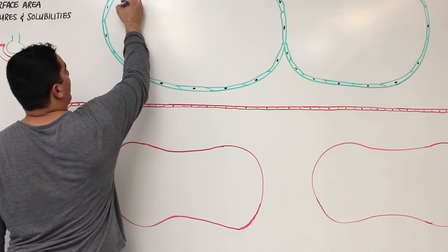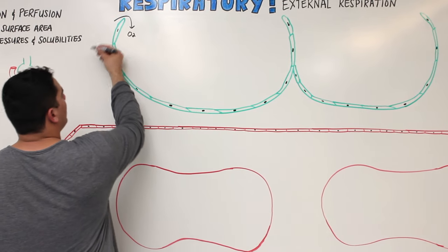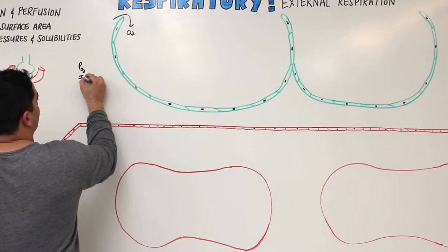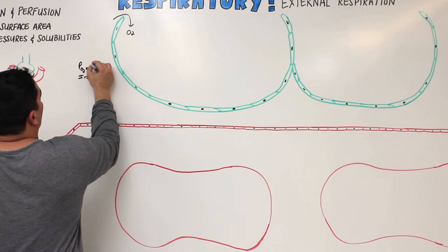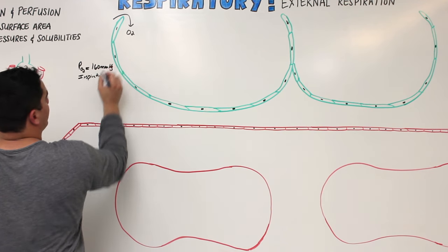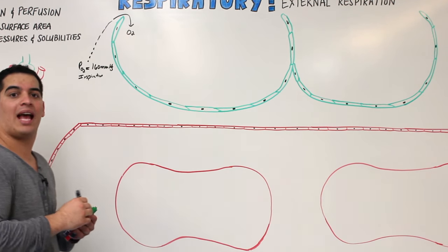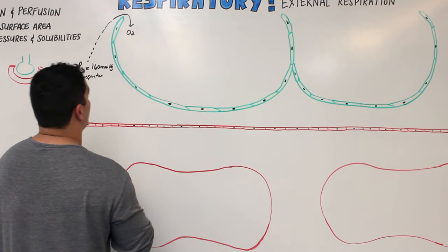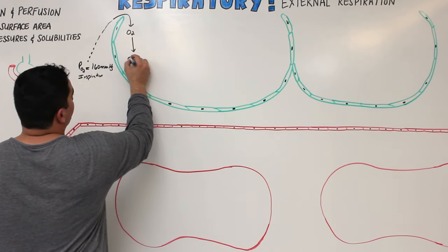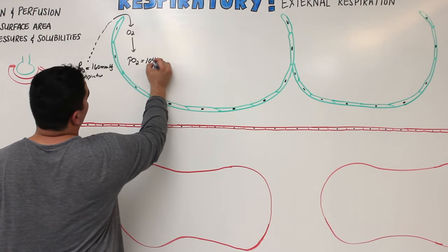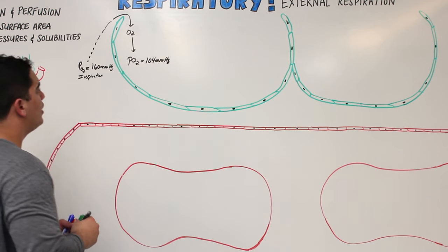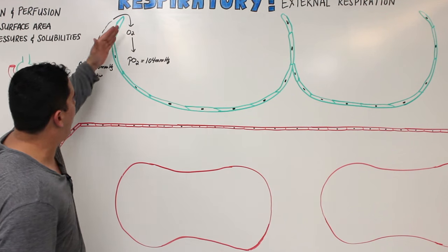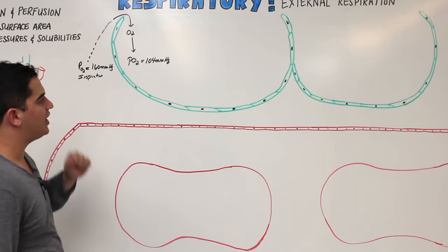Oxygen is going to be coming from the atmosphere. Generally, the partial pressure of oxygen coming in during the inspiration process is about 160 mmHg. When it flows in, it flows in until the partial pressure of oxygen in the alveoli reaches approximately 104 mmHg. So alveolar PO2 is about 104 mmHg, while atmospheric oxygen comes in at about 160 mmHg.